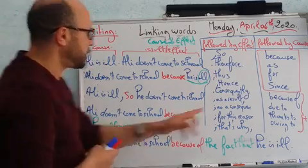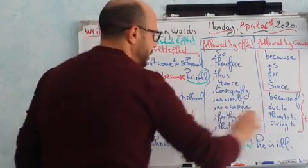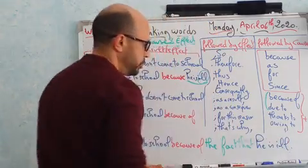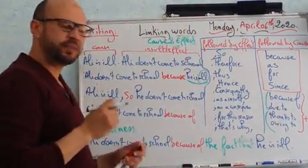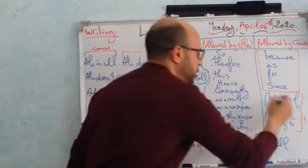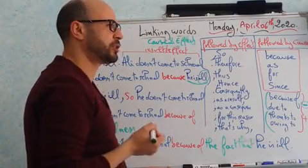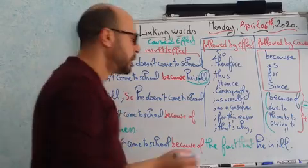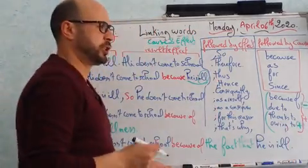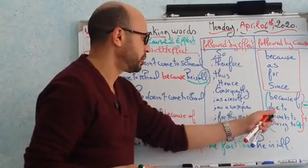What we said about 'because of' also applies to 'due to,' 'thanks to,' and 'owing to' — all of them need a noun. There is a slight difference in connotation between them. 'Because of' and 'due to' have a negative connotation — in Arabic: 'bi sababi.' But 'thanks to' and 'owing to' have a positive connotation — in Arabic: 'bi fadli.' So 'bi fadli' is positive, but 'because of' and 'due to' are negative.